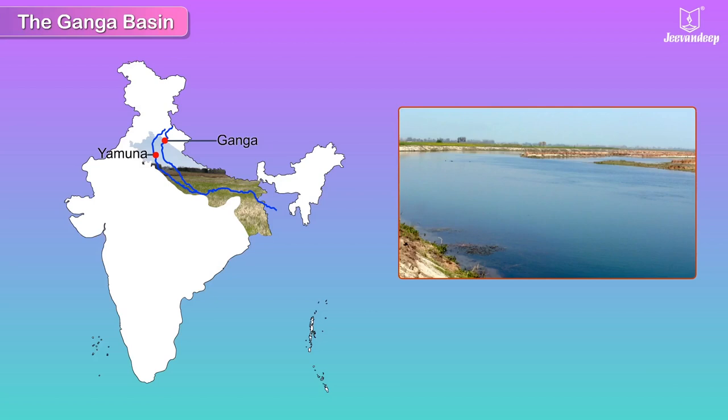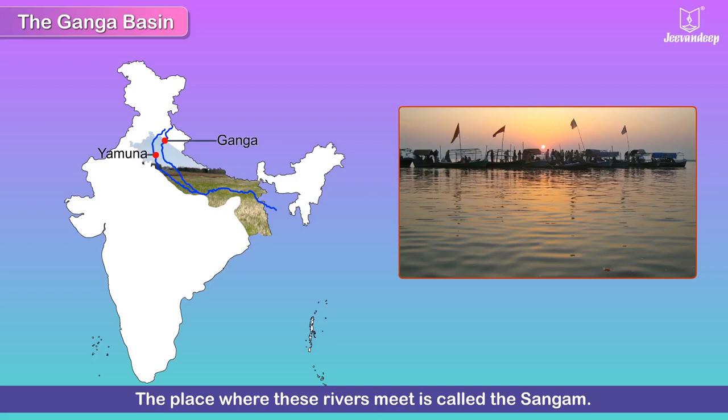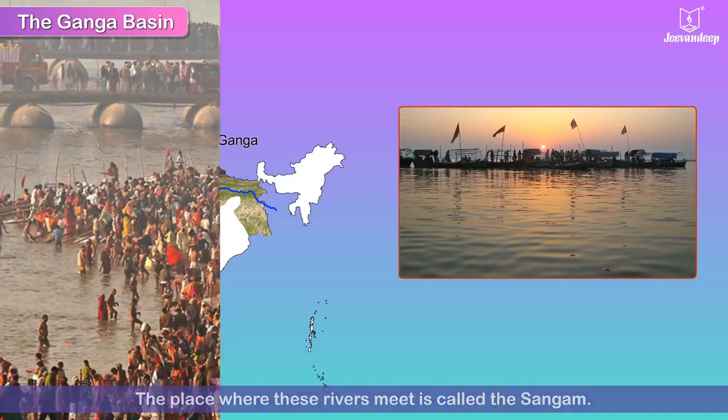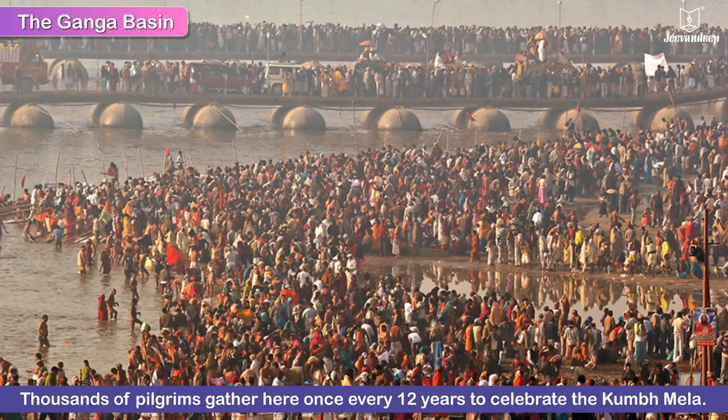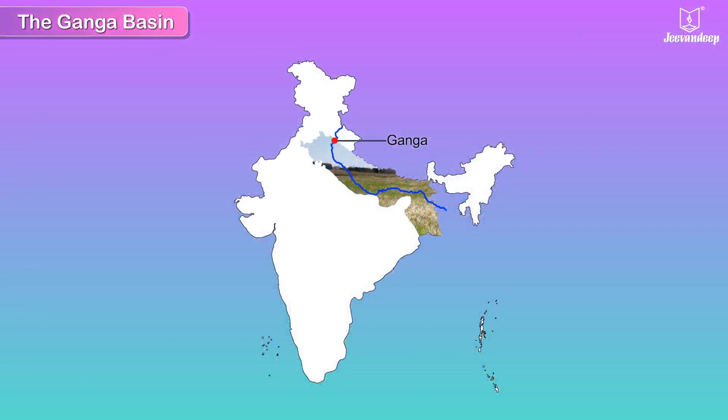The Yamuna River, also a Ganga tributary, waters the northern plains and joins the Ganga at Allahabad. The place where these rivers meet is called the Sangam. Thousands of pilgrims gather here once every 12 years to celebrate the Kumbh Mela.